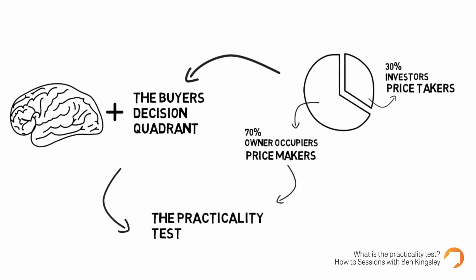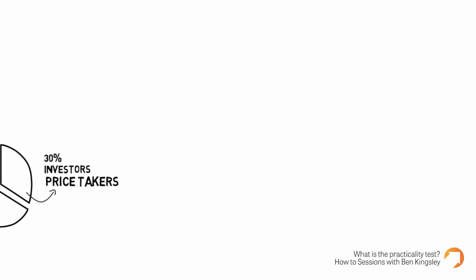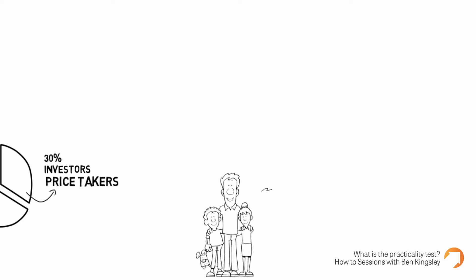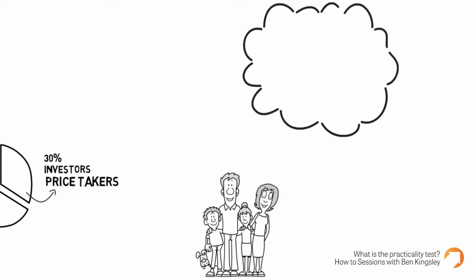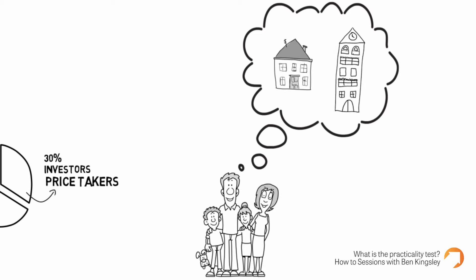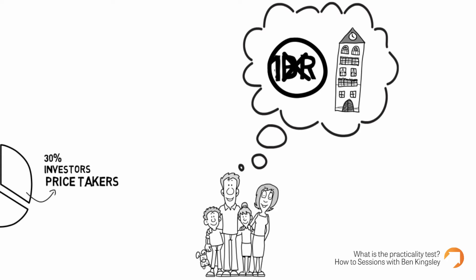So if we put our owner-occupied buyer's hat on and start thinking from a practical standpoint, what are the considerations owner-occupiers are making in their decisions? Let me give you an example. Let's say we've got a couple with two children — an eight-year-old and a twelve-year-old — going through the decision of where they want to live and what type of dwelling will accommodate their needs. If we looked at a one-bedroom unit, it's not going to accommodate the bed space they need, so it naturally fails the practicality test — but that's easy to understand.